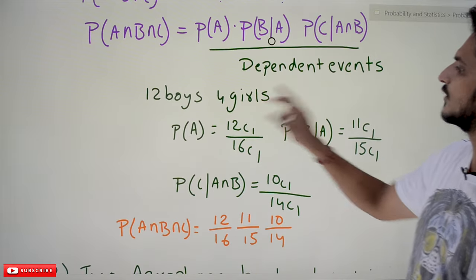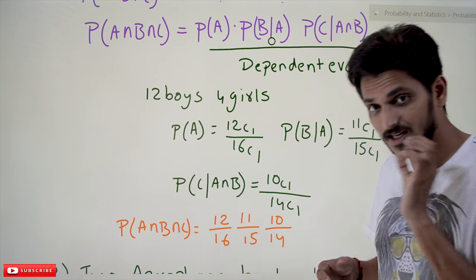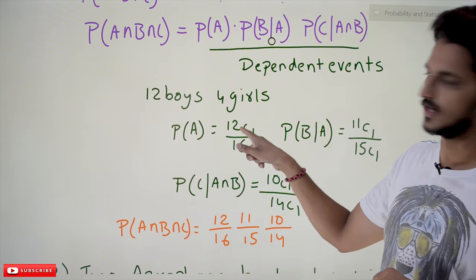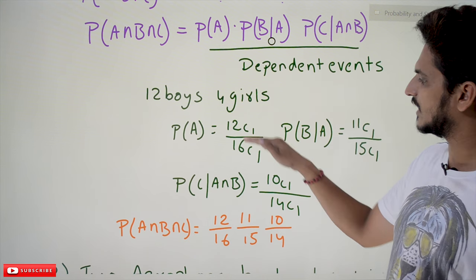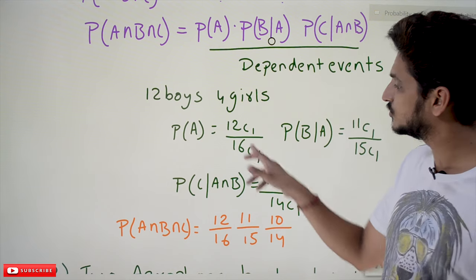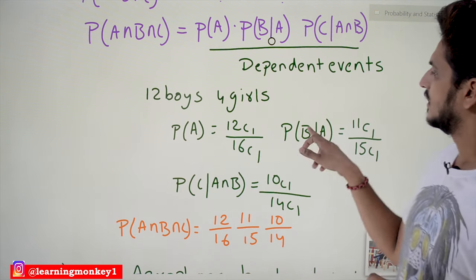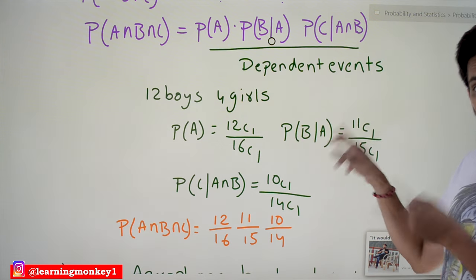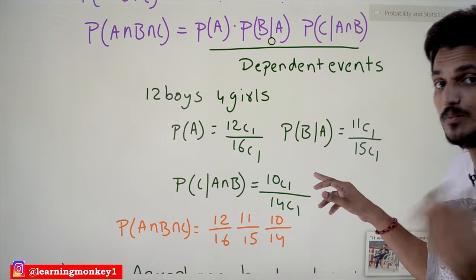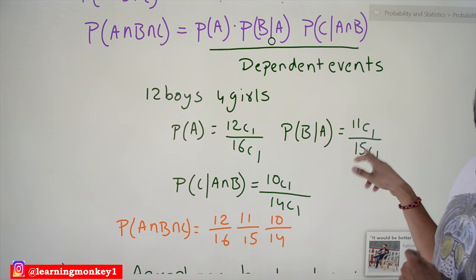Now coming to the answer: 12 boys and 4 girls are there. P(A) — selecting a boy the first time — is 12C1 divided by 16C1 (16 total students). P(B|A) — a boy already selected, so 11 boys remain out of 15 students — is 11C1 divided by 15C1.